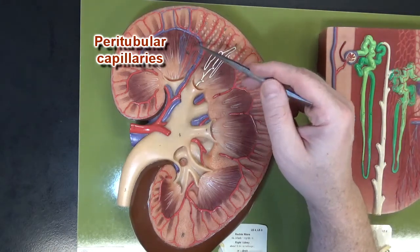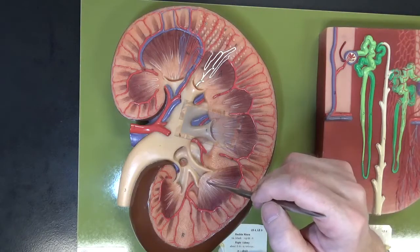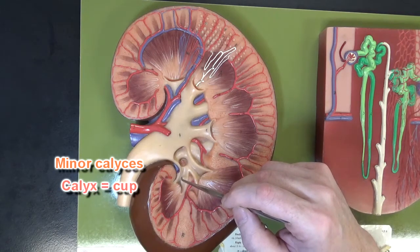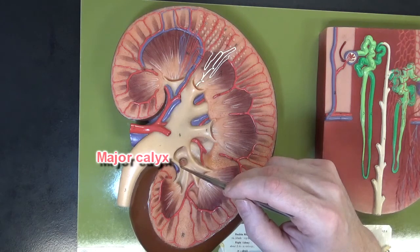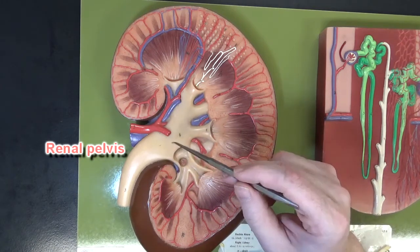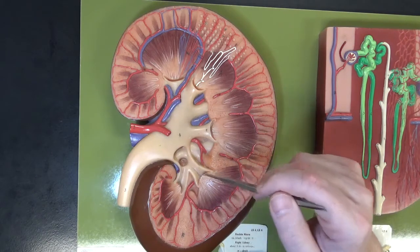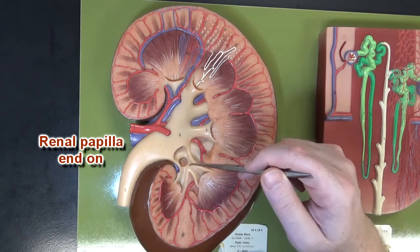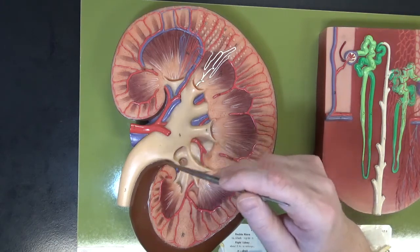Here we can see some peritubular capillaries. The urine will drip off these papilla and be collected by these small cups right here, or minor calyces — calyx means cup. Those minor calyces will dump the urine into a major calyx, and the major calyces would dump the urine into the renal pelvis, which will funnel the urine into a ureter. This structure here is a renal papilla as it connects to a minor calyx, viewed end on, with the pyramid spreading out underneath all of this tissue.